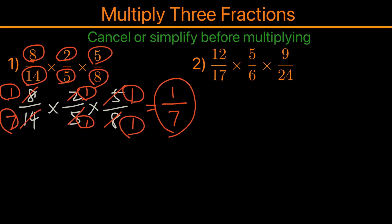Now for the second example, we have 12 over 17 times 5 over 6 times 9 over 24. We'll do the same thing—we'll look at all the numbers and see if we can cancel or simplify first. From here, you can see 12 and 24; they're both divisible by 12, so 12 becomes 1 and 24 becomes 2.